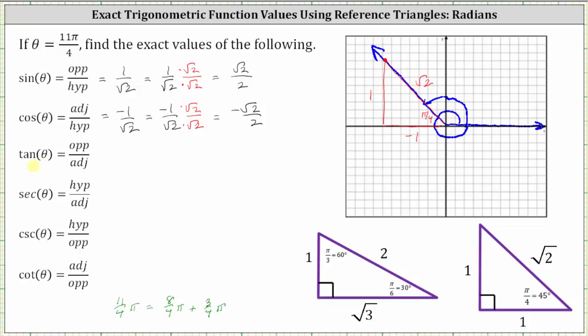Tangent of 11 fourths pi radians is equal to the ratio of the opposite side to the adjacent side, which gives us one divided by negative one, which is just negative one.